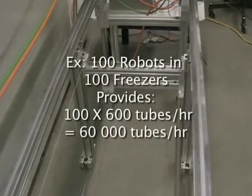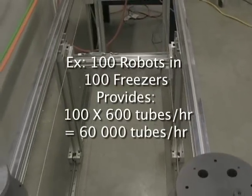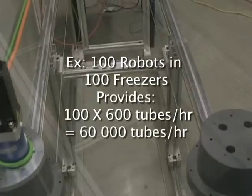Due to the scalable nature of the system, the more freezers and robots that are added, the faster tubes can be picked.